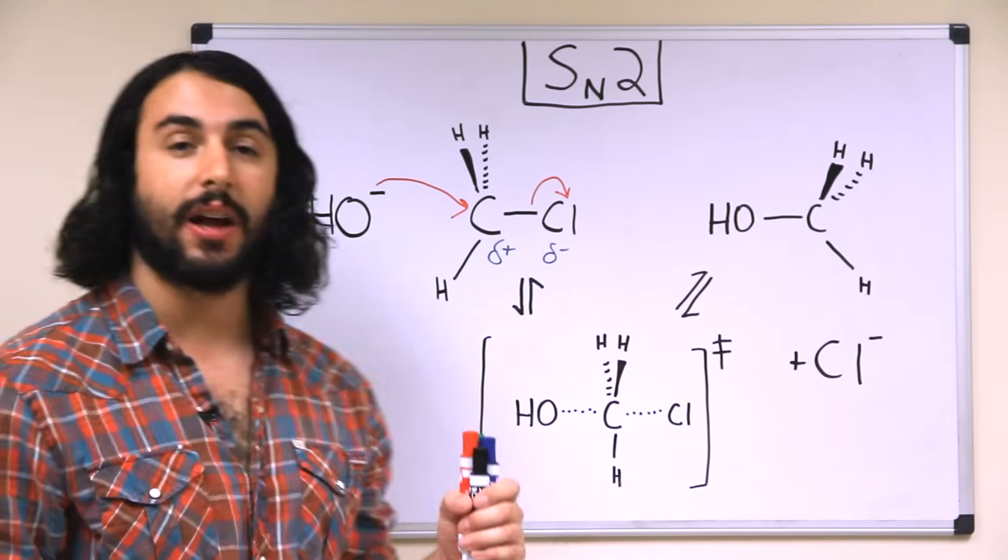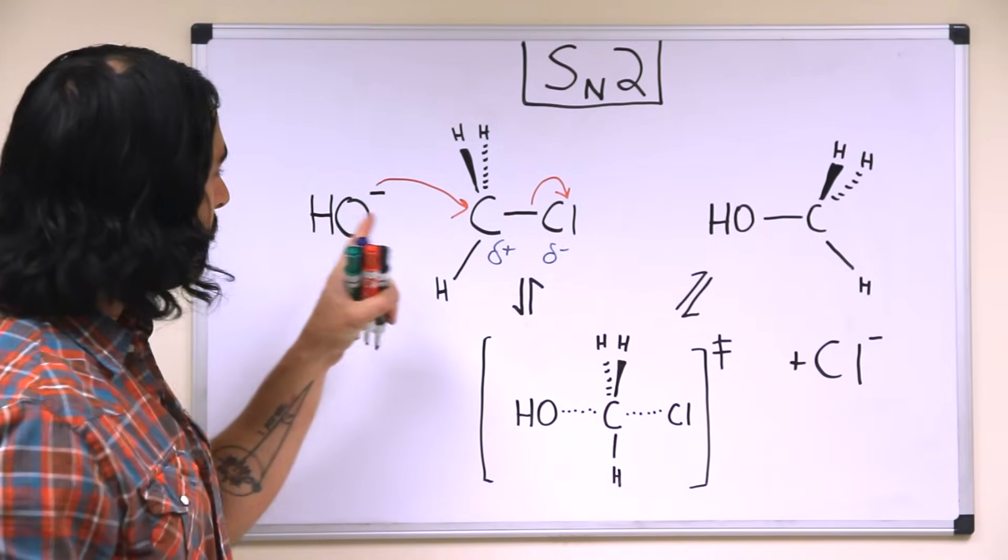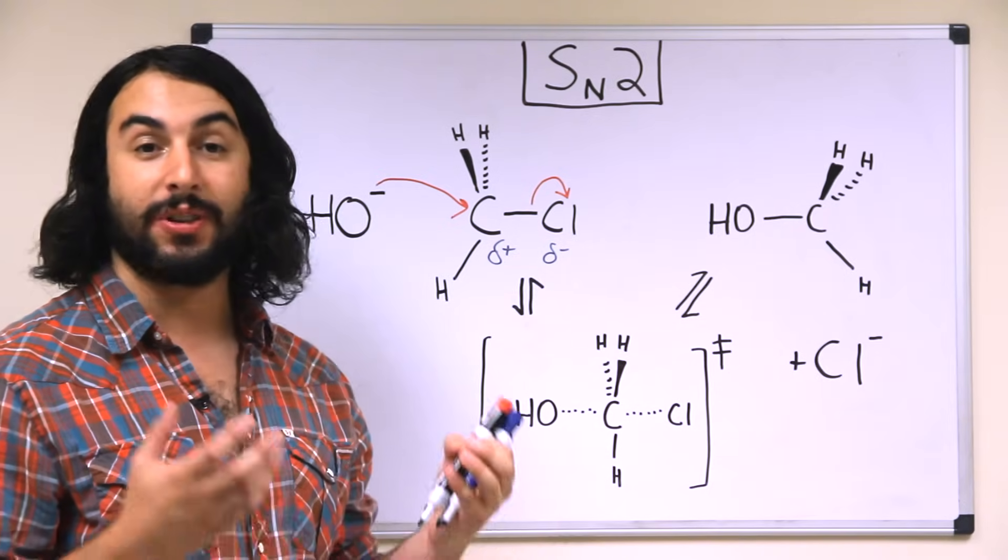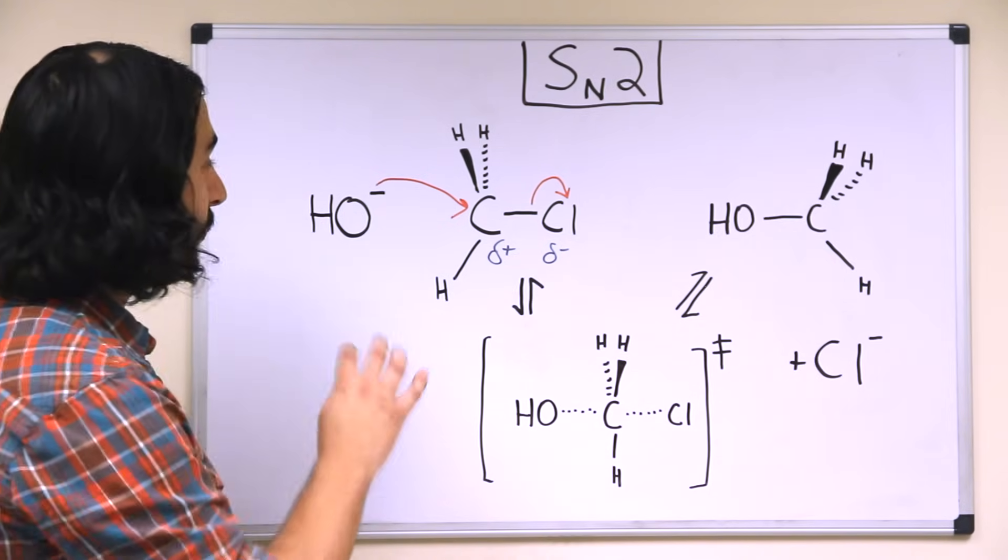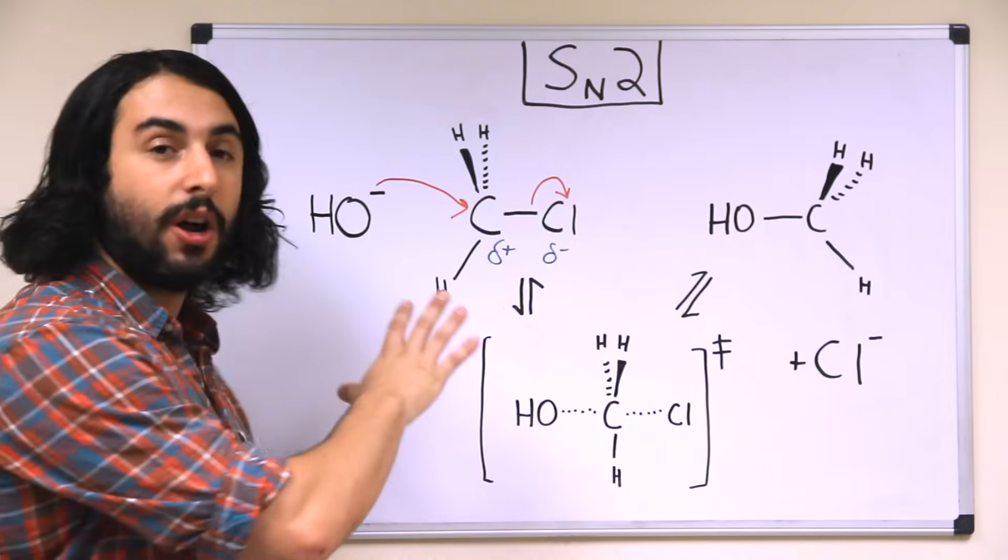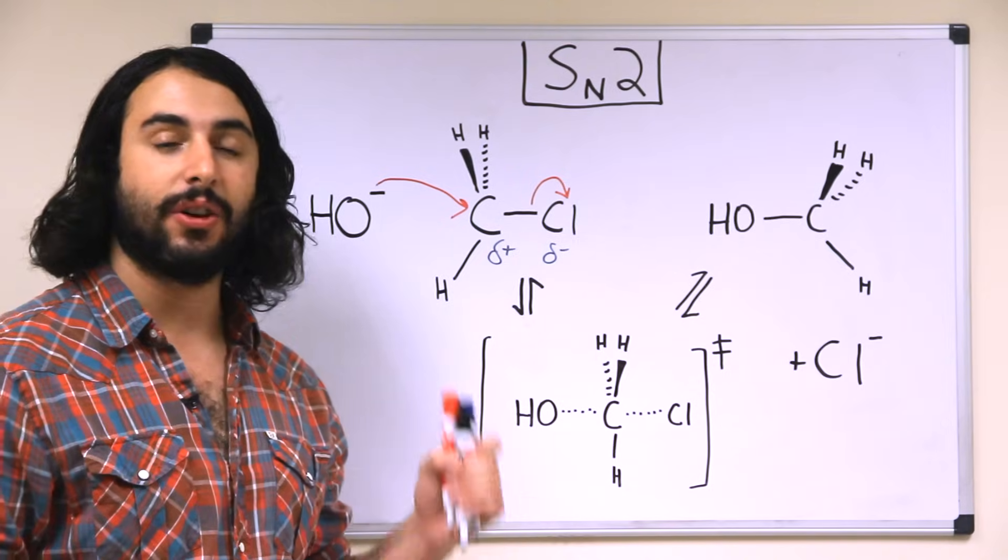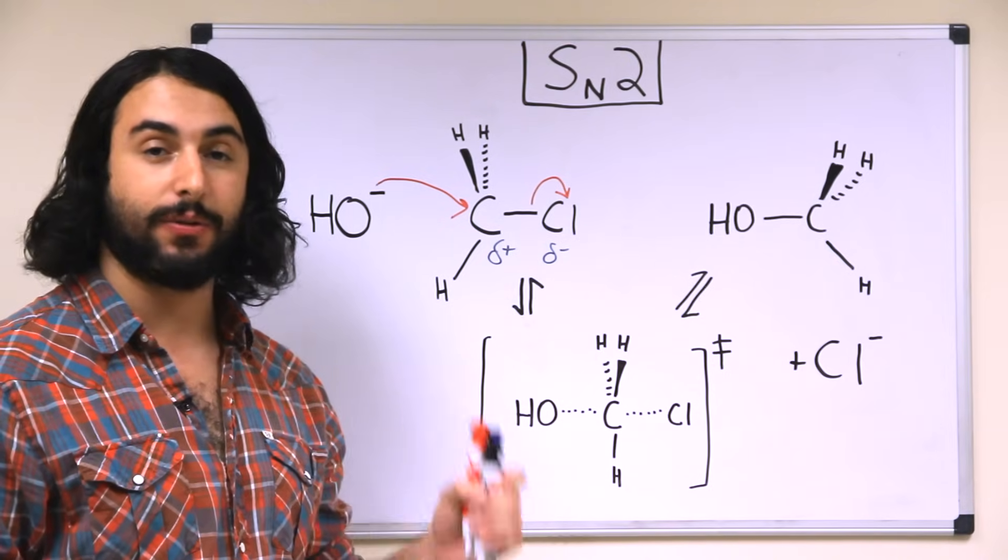So let's take a look at some other aspects of the SN2 reaction. This is an sp3 hybridized carbon with tetrahedral geometry. There's four electron domains, so these are 109.5 degree bond angles. Now for the SN2 reaction, there has to be a backside attack for the nucleophile